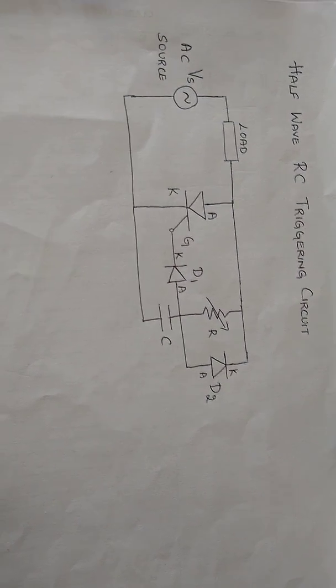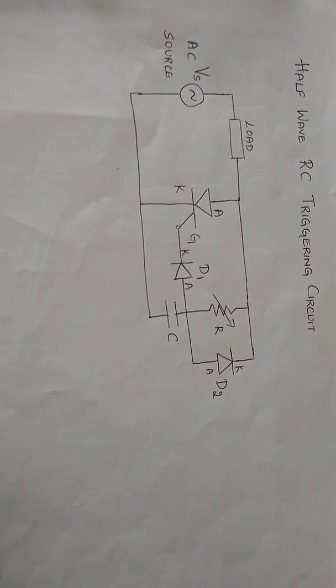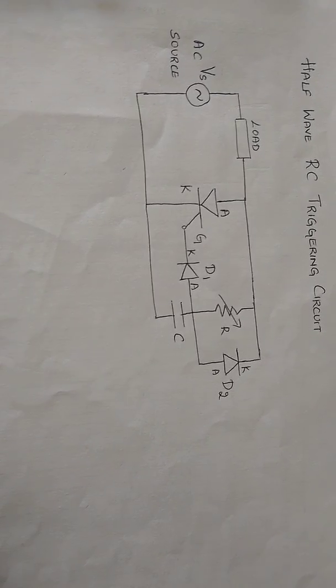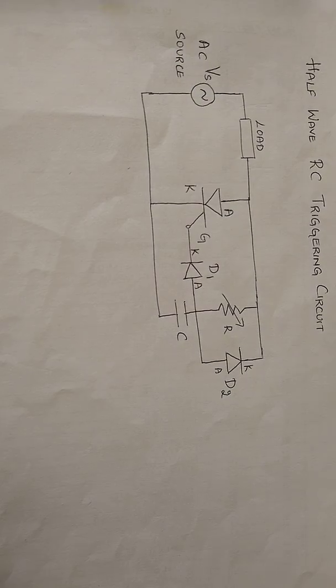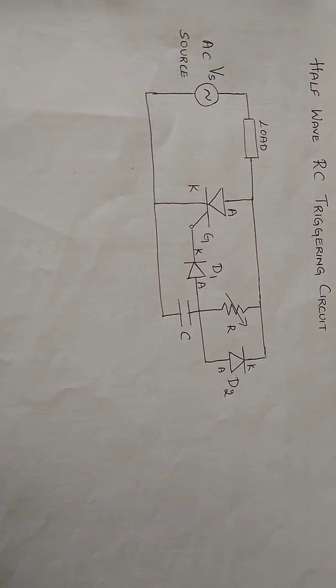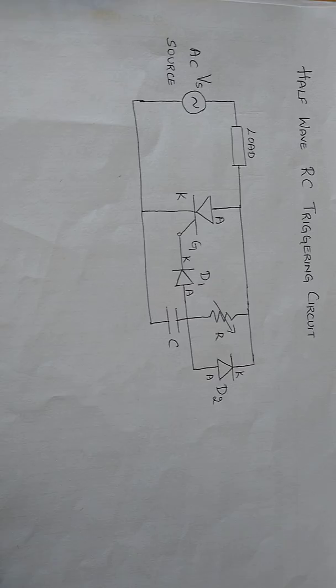This circuit includes transformer, two diodes D1 and D2, SCR that is silicon controlled rectifier, variable resistor, capacitor of 0.47 microfarad and load resistor.